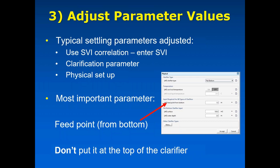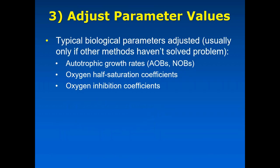For settling parameters, I use the SVI, the clarification parameter, and one other important parameter: the feed point from the bottom of the clarifier — where do the solids come in, at what height? That's actually on the physical menu, not the settling menu. Even though you may think you have a solid measurement for it, the feed point is actually a calibration parameter. Because we have a one-dimensional clarifier model, don't put the feed point at the very top of the clarifier or you'll find very high solids in your effluent. Set it closer to where the sludge blanket height would be.